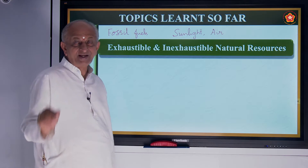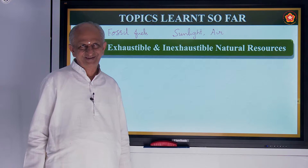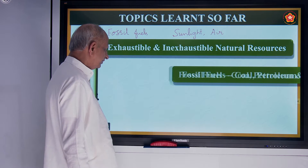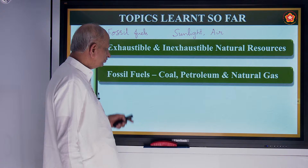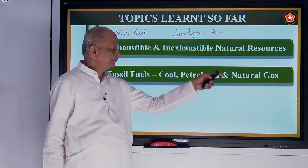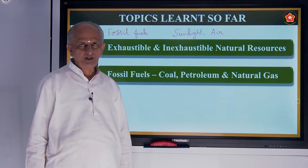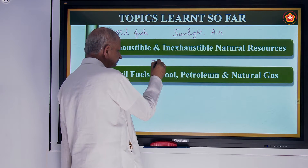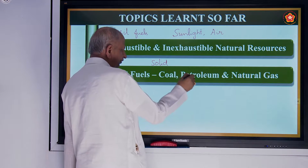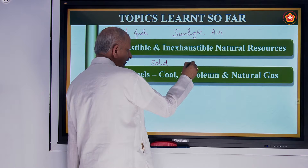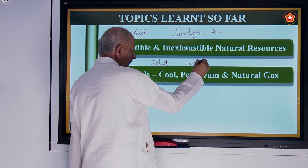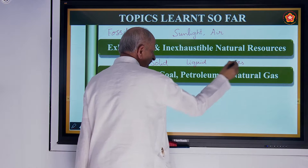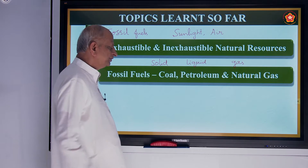They are natural resources, meaning obtained in nature. So these are the three fossil fuels. Coal is in a solid form. Petroleum is in a liquid form. Natural gas is in a gaseous form. So they are available in three forms.